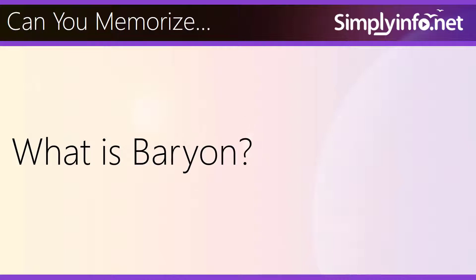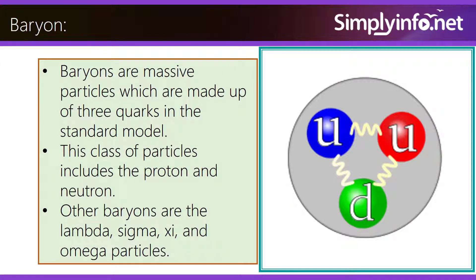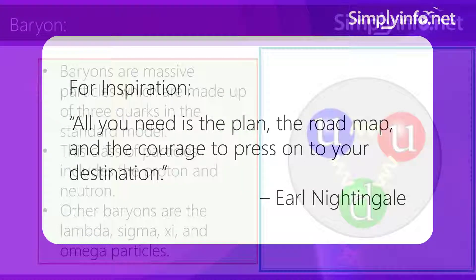Can you memorize what is baryon? Baryons are massive particles which are made up of three quarks in the standard model. This class of particles includes the protons and neutrons. Other baryons are the lambda, sigma, xi, and omega particles.